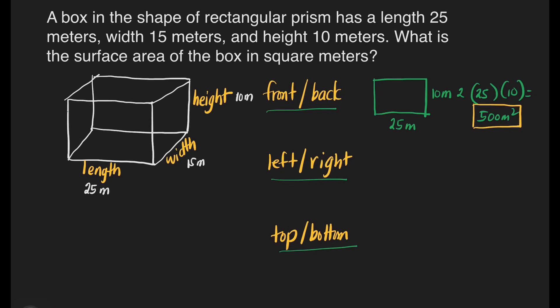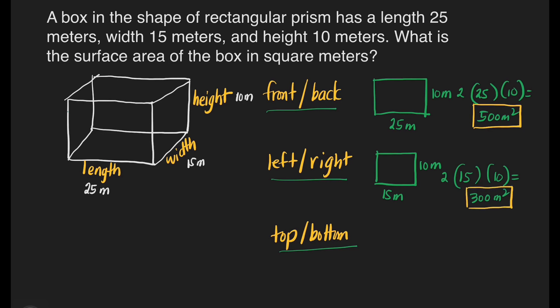Now let's move on to the left and right faces. We have here the width of 15 meters and a height of 10 meters. So, 15 times 10 times 2, because we have 2 faces — the left and the right. That's going to be 15 times 10 is 150, times 2 is 300 meters squared. This is for our left and right faces.